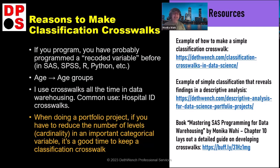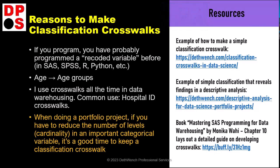If you join my data science online mentoring program and do a portfolio project, you might just be doing a crosswalk to reduce the number of levels — the cardinality — of an important categorical variable. I'm going to show you something and you'll think, okay, I've done that before, that's basically recoding groups. But what I'm going to show you is how you sit down and design the new crosswalk variable using your brain, then go program it.